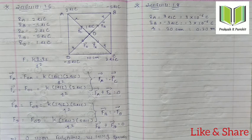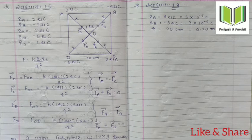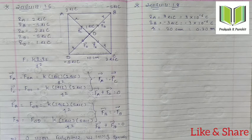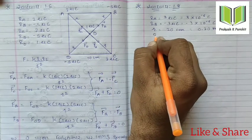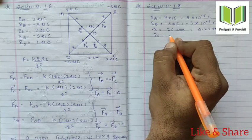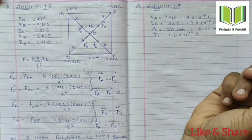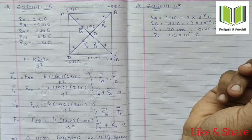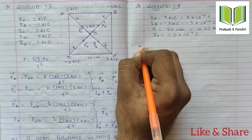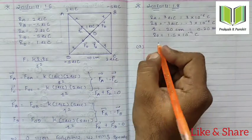Find the electric potential at the midpoint O of the line joining the two charges. The result involves values like 1.5×10⁻⁹.